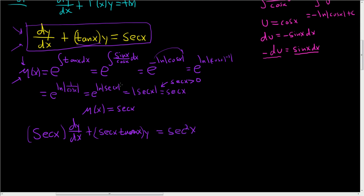And the magic thing that happens with linear equations is that this entire sum here is the derivative with respect to x of our integrating factor, μ(x), so secant x, times our unknown function y. And this is equal to the secant squared of x.